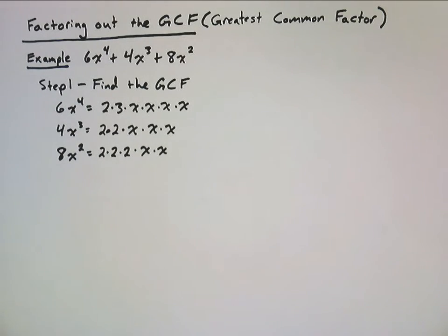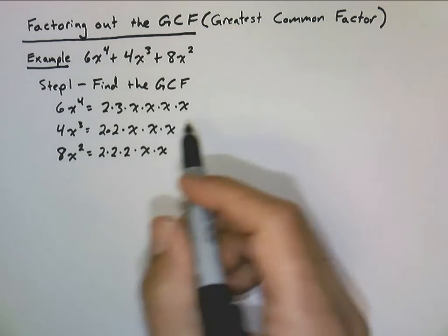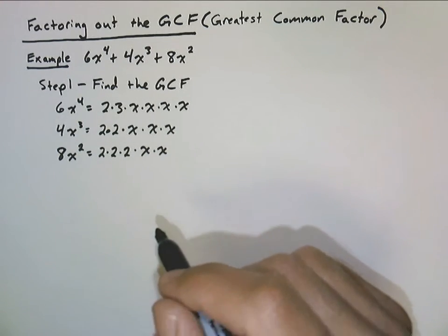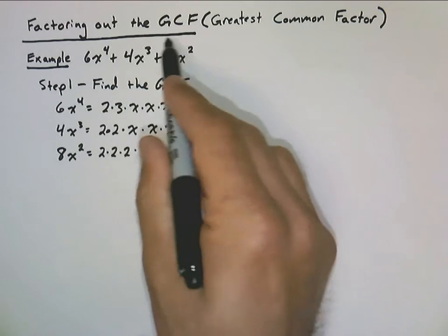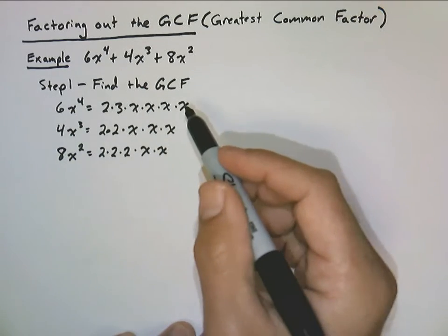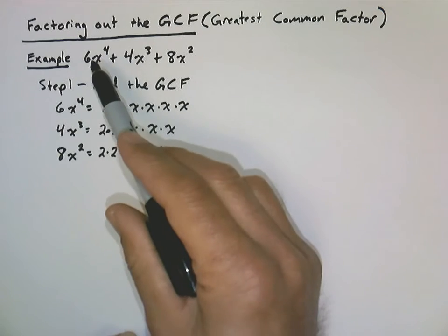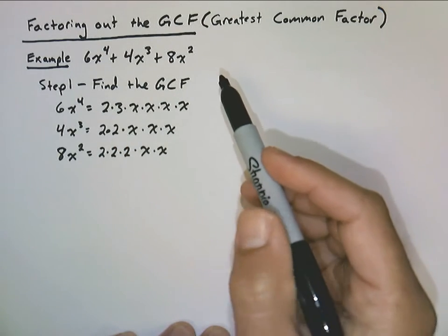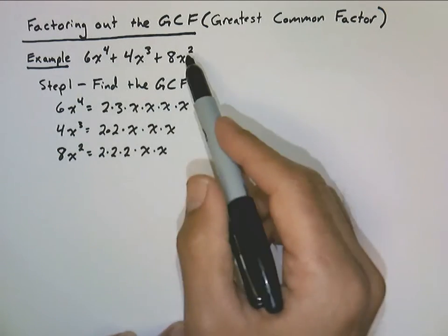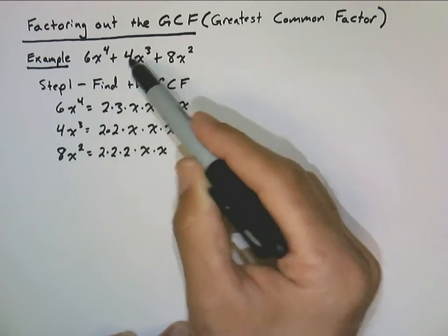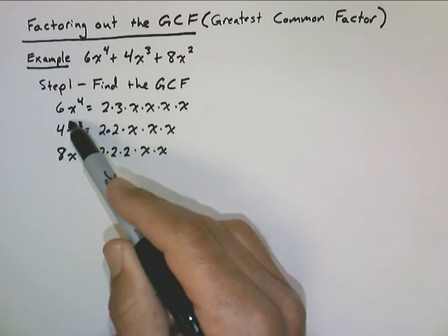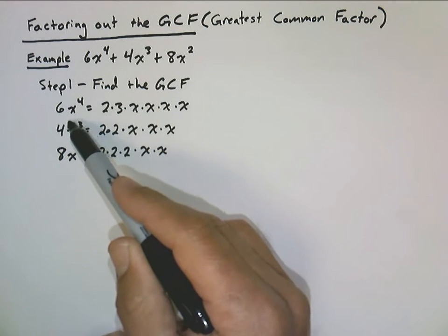The most basic kind of factoring is called factoring out the GCF — that's basically what we did in the last example. There are more complicated versions, but we're going to start with just this one. Suppose we want to factor this polynomial here. It's a fourth-degree polynomial with three terms, or a trinomial. We've got to find the greatest common factor of these three terms. You probably remember GCFs from way back, but you just did it with integers. Now we're going to do it with polynomials. We need to find the GCF of these three terms, and just like integers, you can prime factorize the terms within a polynomial.